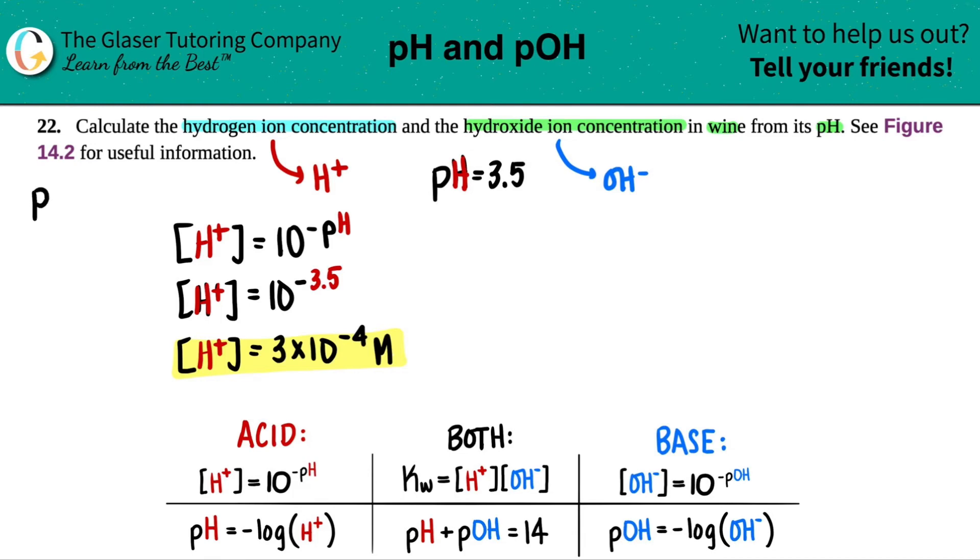So for example, if we did want to go this route, they gave us the pH and somehow I want to find out the hydroxide concentration. Now, how would I do that?